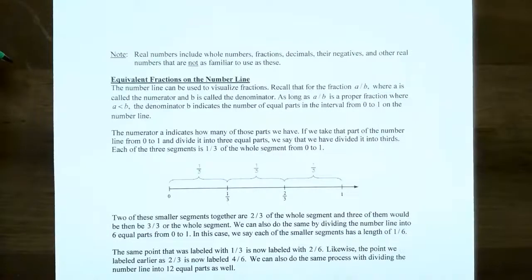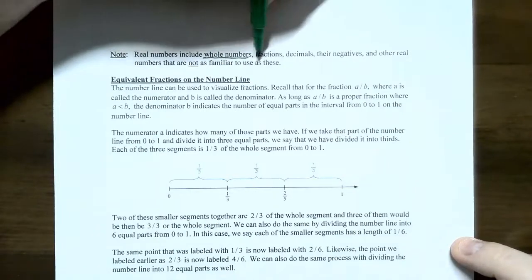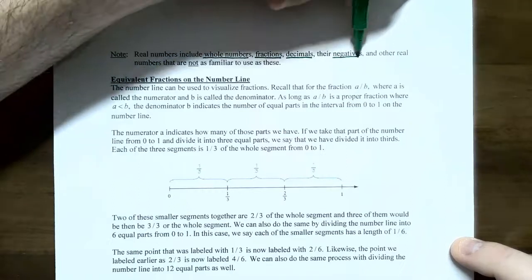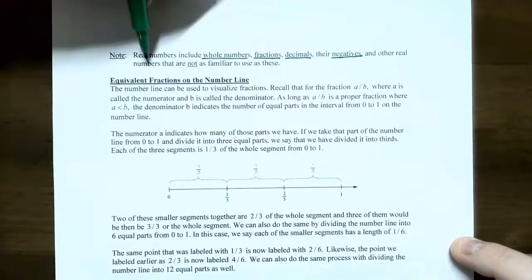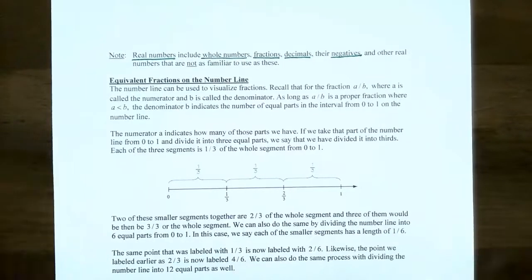What do real numbers really consist of? They can be whole numbers, fractions, decimals, negative numbers, and any other real number you can think of — all will have locations on the real number line. They can be decimals with a finite number of decimal places like 3.52, or like pi which has an infinite number of decimal places: 3.14159 and so on.